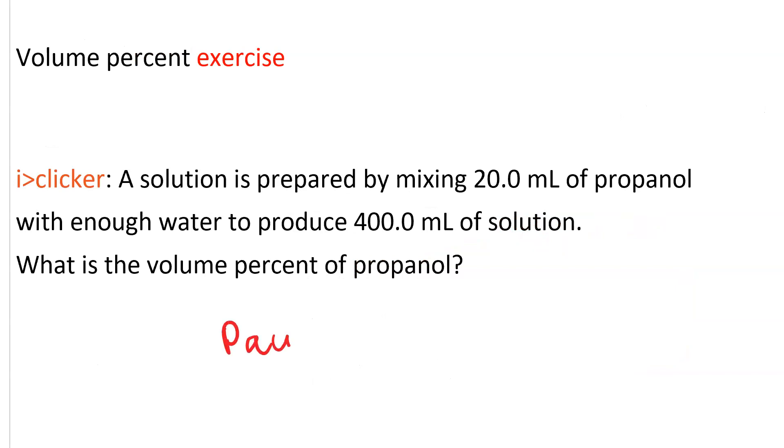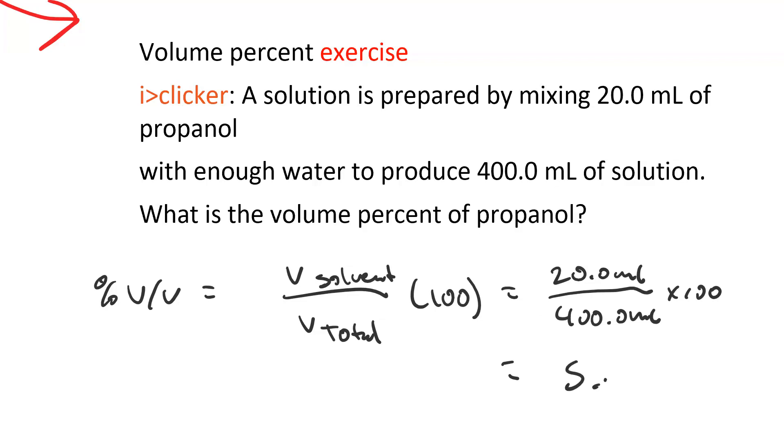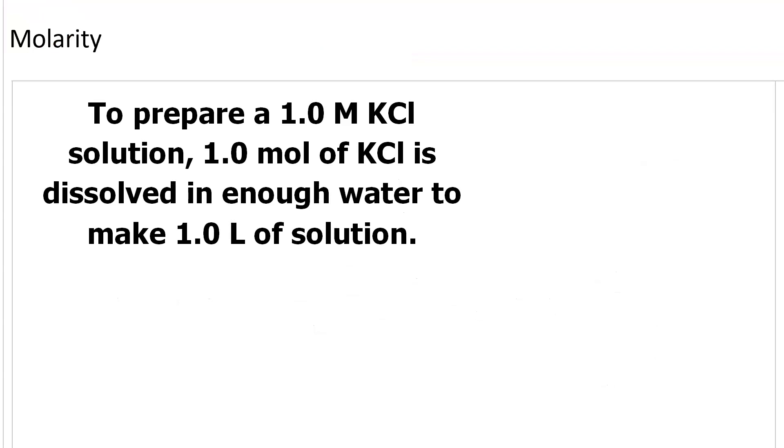Here's a volume percent exercise. Pause and work it. Then unpause to see my answer. To solve this question, we use percent v/v equals the volume of our solvent over the total volume times 100. So we got 20.0 milliliters over 400.0 milliliters times 100, and we get 5.00%.